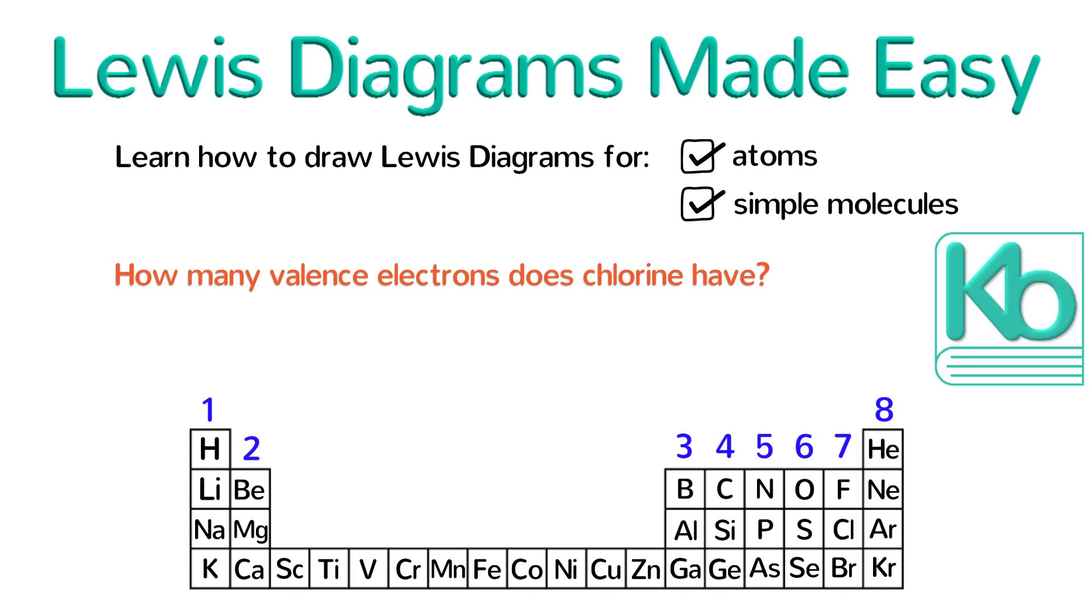Now, find chlorine in the periodic table. Remember that its symbol is Cl. See it in the seventh column? That tells us that it has seven valence electrons.